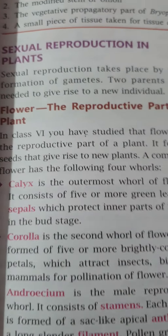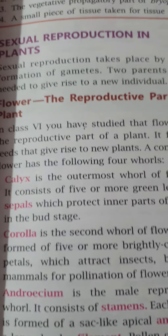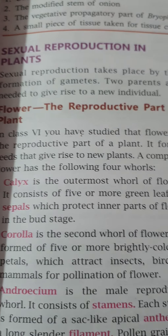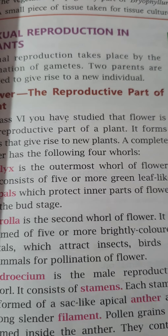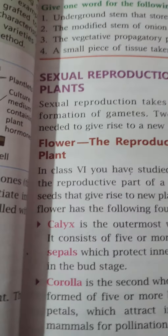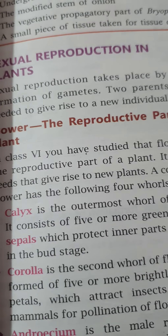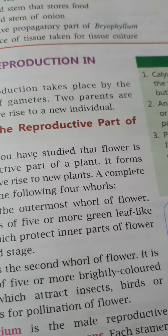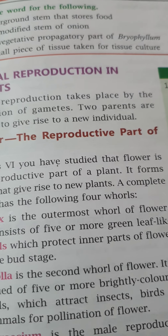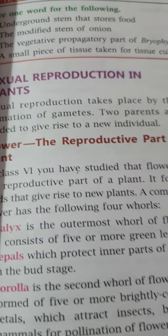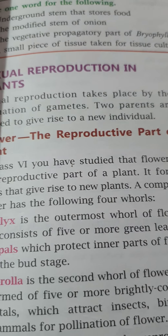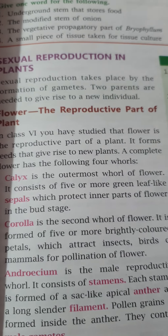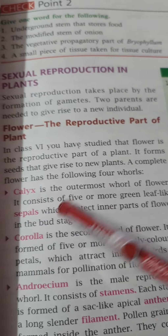To understand the process of reproduction in flowering plants, we need to look at the different parts of a flower and their functions. You have studied these things earlier in Class 6 and Class 7 as well. In Class 6 there is basic knowledge, in Class 7 a little more, and in Class 8 we study in detail, which will also help you in Class 9. So we have to go through the flower — the reproductive part of the plant.